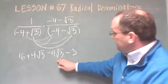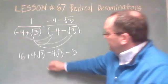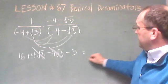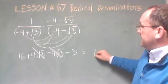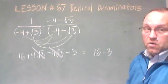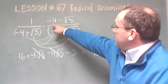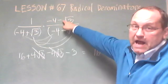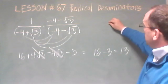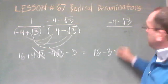We combine like terms: we're adding a 4 square root of 3 and subtracting a 4 square root of 3 — these two terms cancel each other out. What we are left with is a 16 minus 3, or simply a 13. In the numerator, it's going to be 1 times that conjugate, so what's left is the conjugate. The new denominator becomes 13.